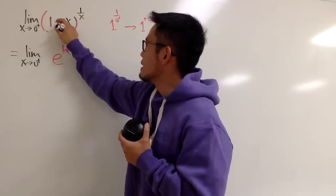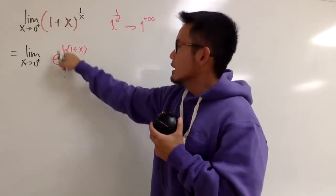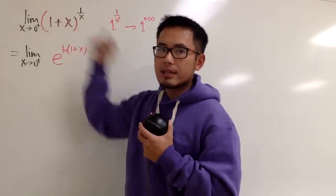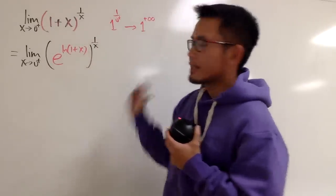See, the base right here, it was 1 plus x. And when I write this as e to the ln of (1+x), e and ln cancel, I get that back, right? However, I still have to have the 1 over x power like that.